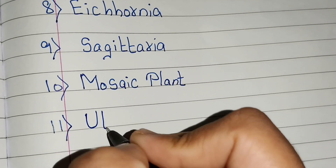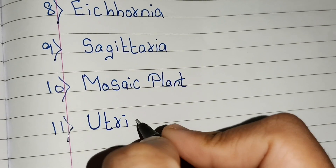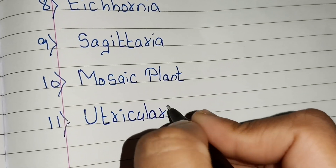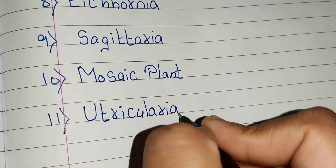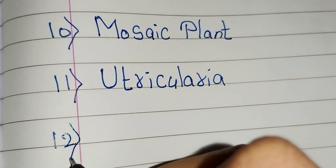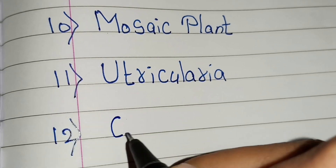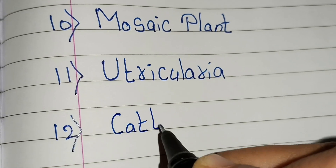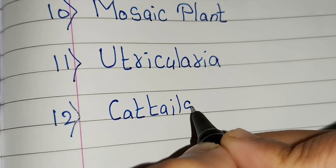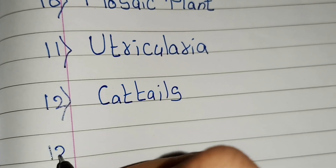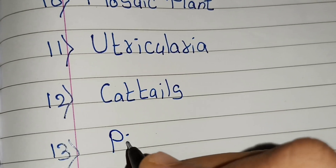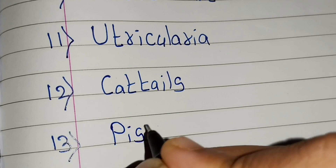Eleventh, utricularia — U-T-R-I-C-U-L-A-R-I-A. Twelfth, water plant name is cat-tails — C-A-T-T-A-I-L-S. Cat-tails.